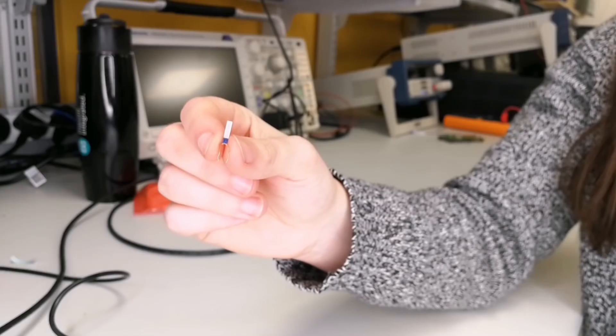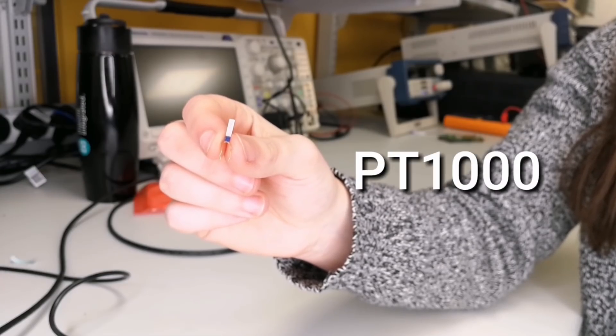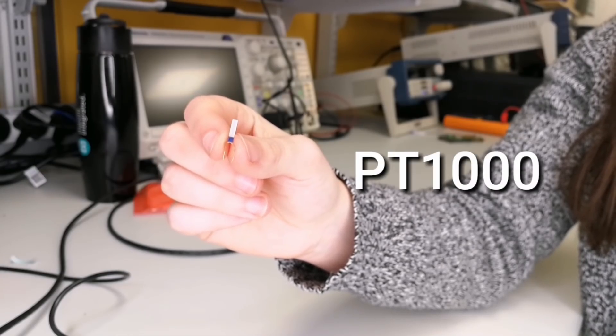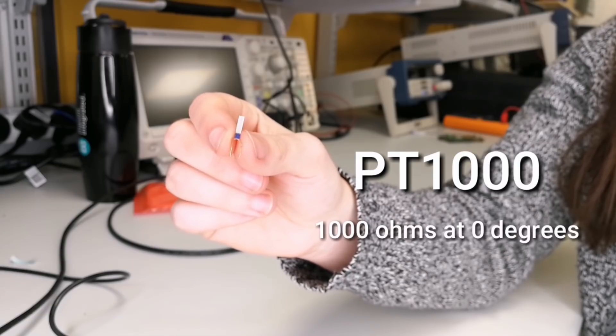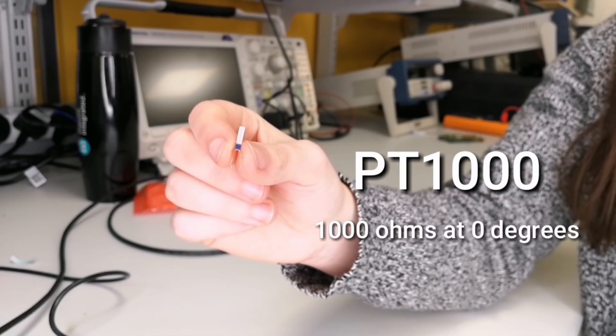RTDs are specified based upon their resistance at zero degrees. So for example, this is a PT1000. That means it's an RTD made out of platinum whose resistance is 1000 ohms at zero degrees Celsius.